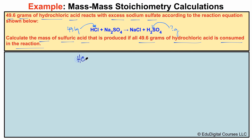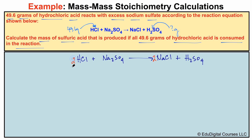We have hydrochloric acid reacting with sodium sulfate, producing sodium chloride and sulfuric acid. Balancing the equation: we have two sodiums on the left and two on the right, which gives us two chlorines on the right and two on the left, two hydrogens on each side, one sulfur on each side, and four oxygens on each side. Our chemical equation is now balanced.